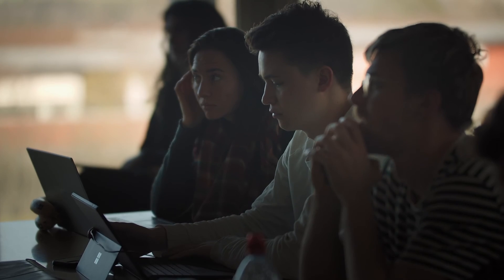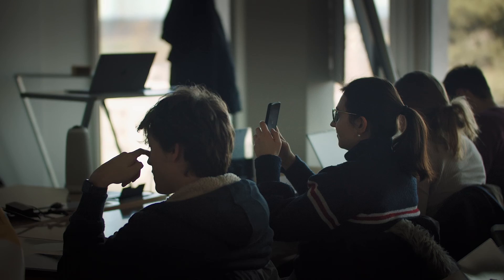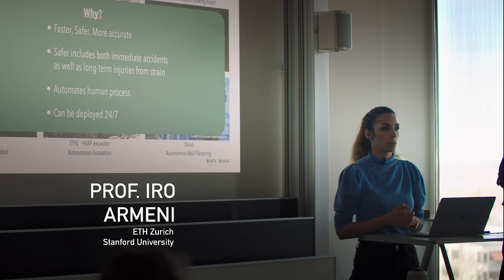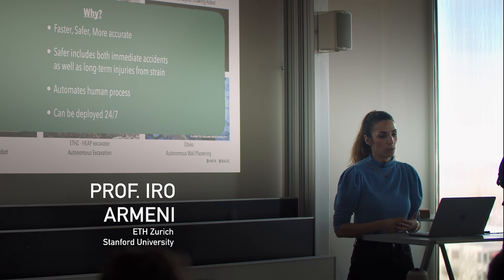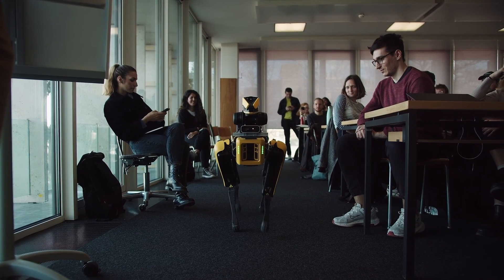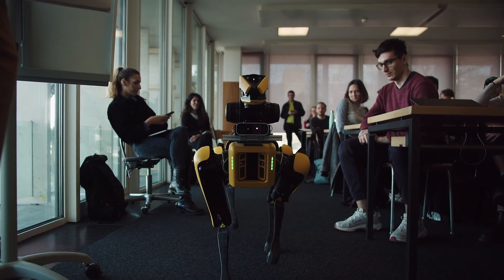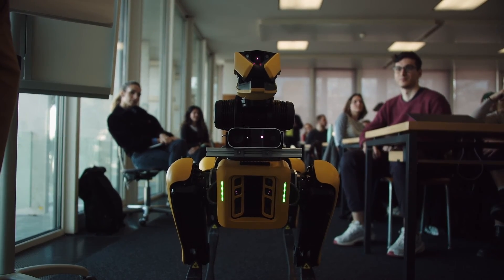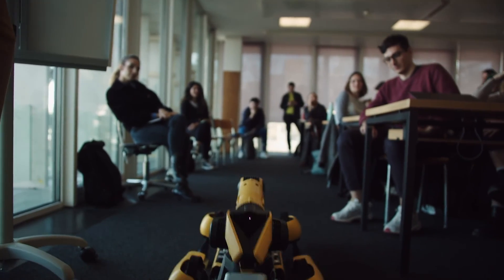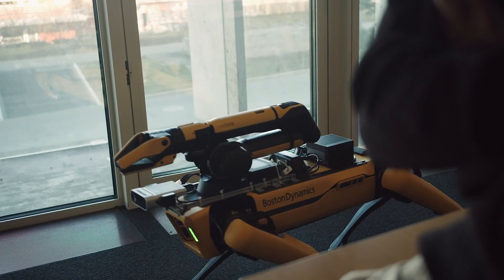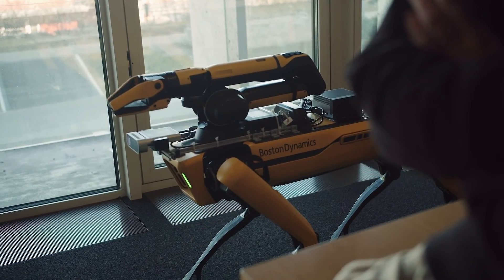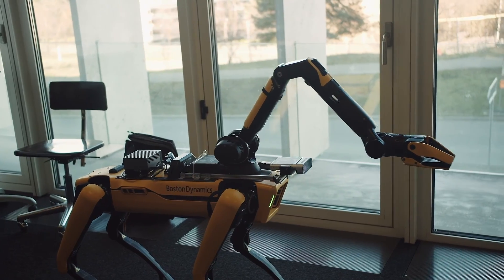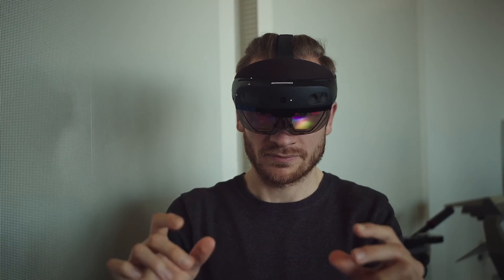We need to think about how we want to use robots in construction specifically, because they can produce things faster, safer, and more accurately. At that point, we need to think about what humans are better equipped for and what robots are better equipped for, and maybe build machines in a way that enables real human-robot interaction.